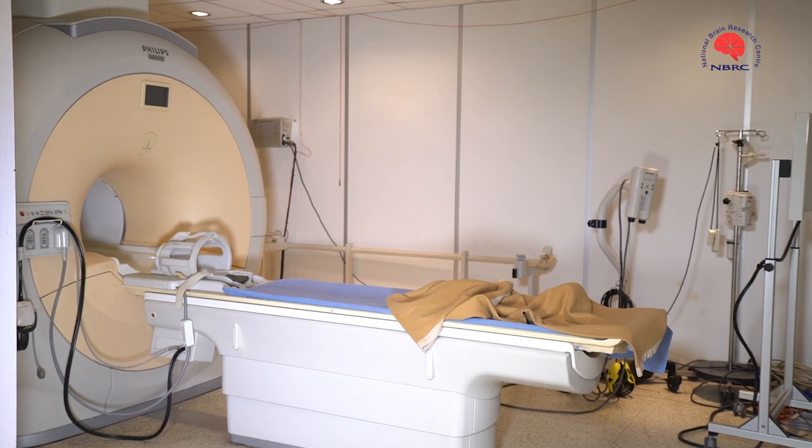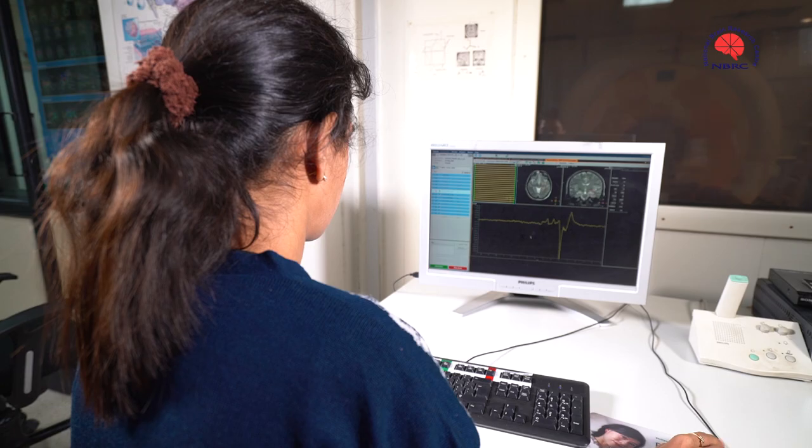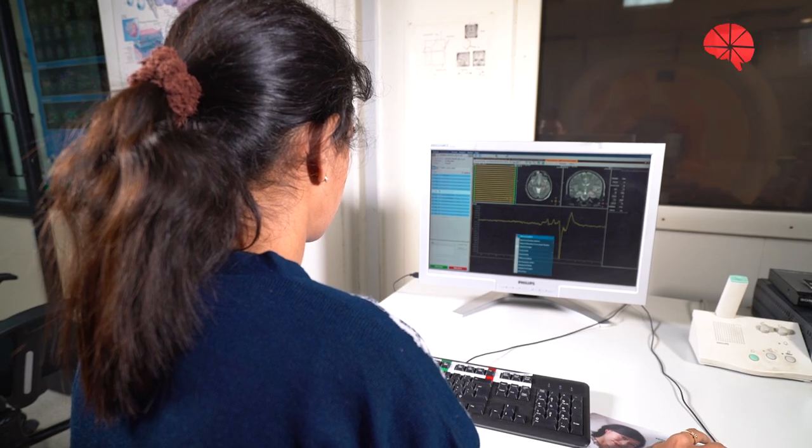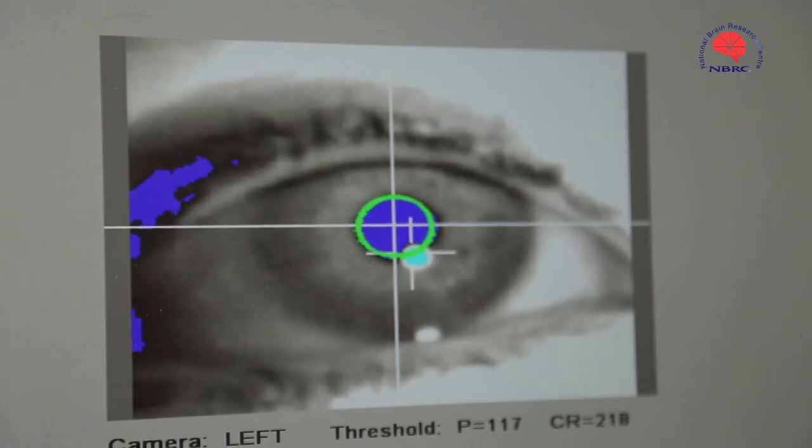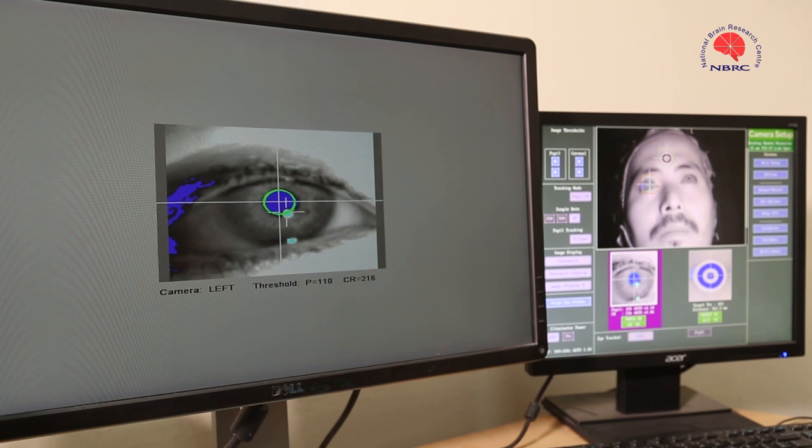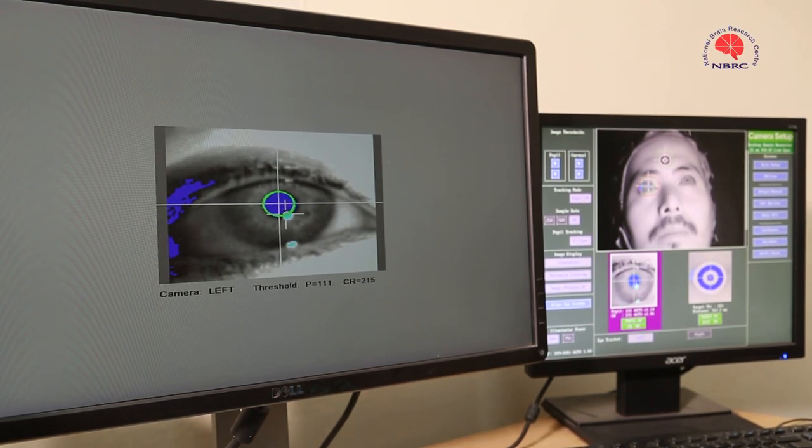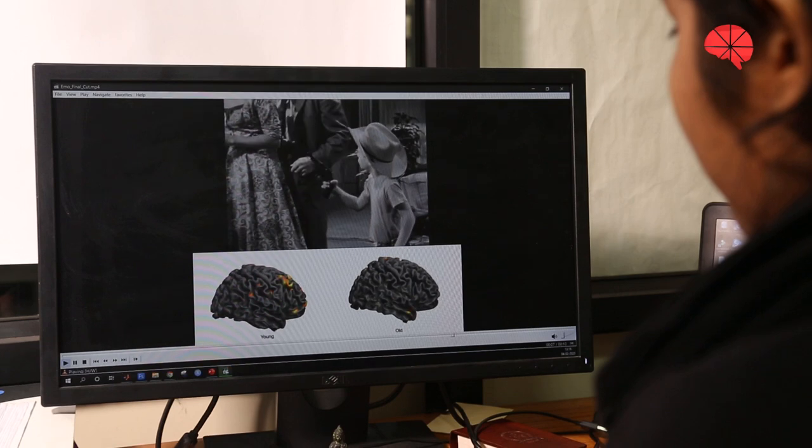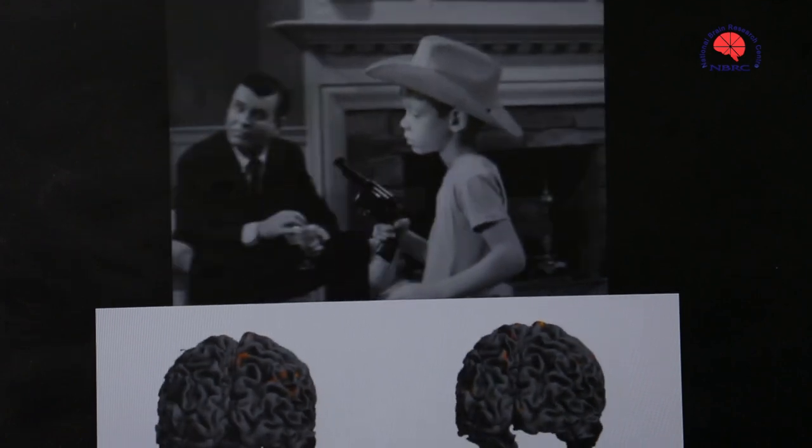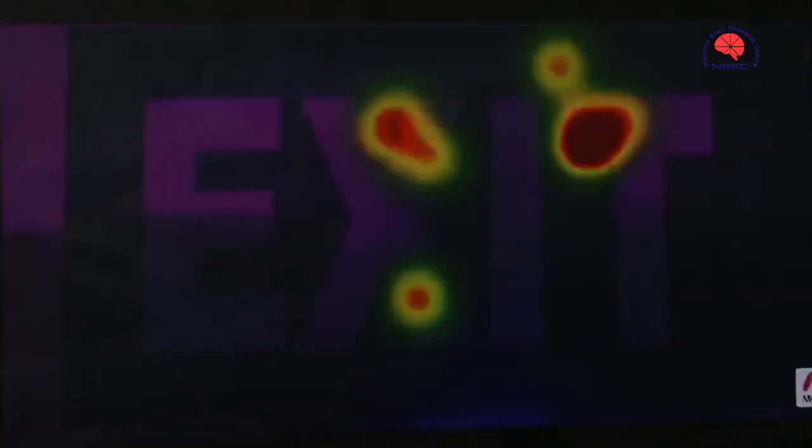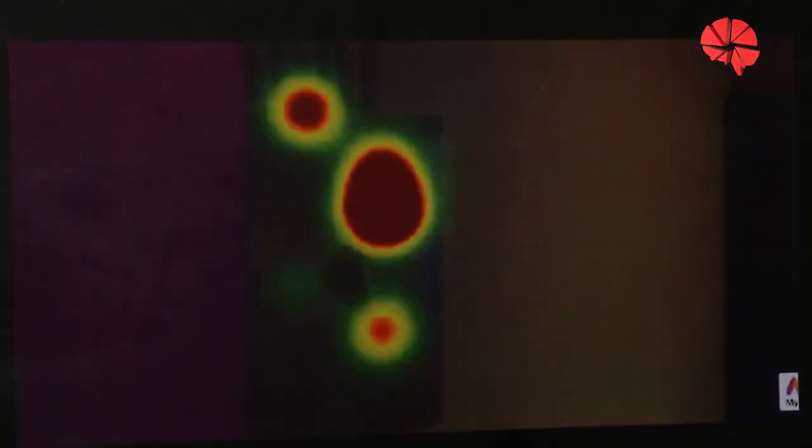NBRC boasts of high-end MR scanner and high-density EEG systems completely dedicated to research and training which has allowed research for immediate social benefits like for dyslexia and autism. Research says music and sung speech are processed differently in the brain in autistic children. This has provided a basis for the objective assessment of music therapy in autism.